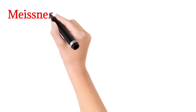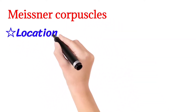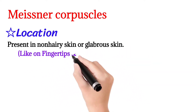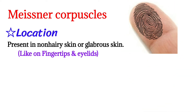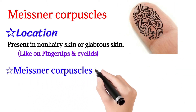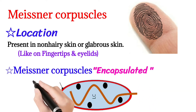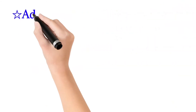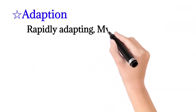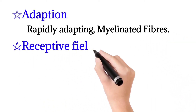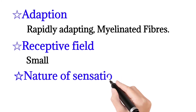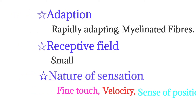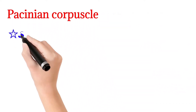First, we will discuss about Meissner corpuscles. Their location: they are present in non-hairy skin or glabrous skin, which is like on fingertips and eyelids. Meissner corpuscles are encapsulated, as shown in the figure. The Meissner corpuscle is rapidly adapting and has myelinated fibers. The receptive field is small.